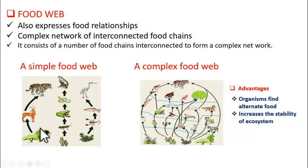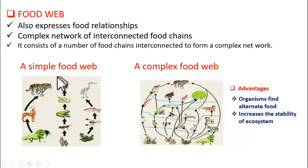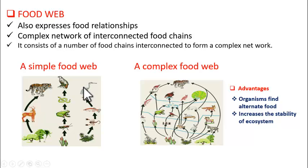Here is a simple food web. There are three food chains — this one, this one, and this one — all connected at one point. This vulture is eating tiger as well as crane, thus connecting these three food chains. This is a simple food web.